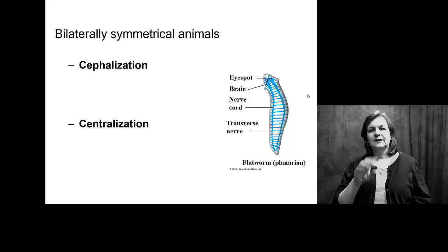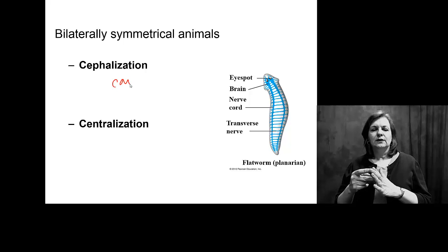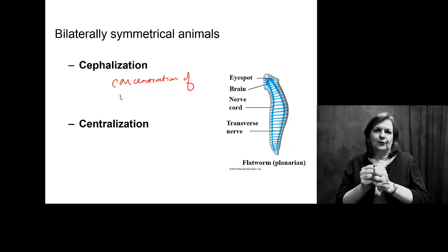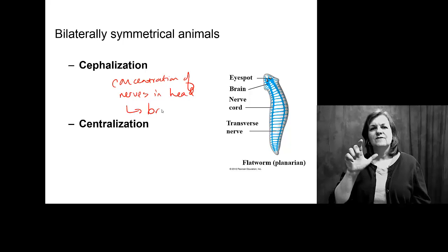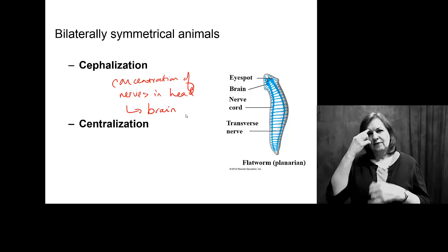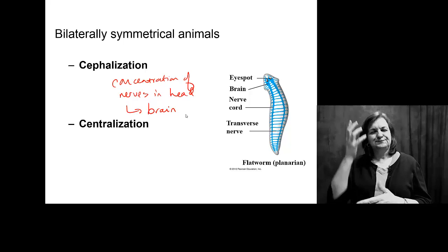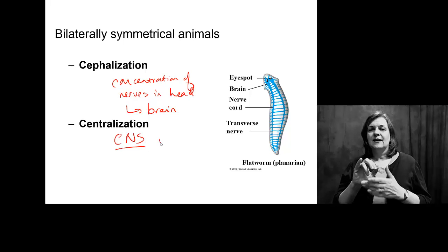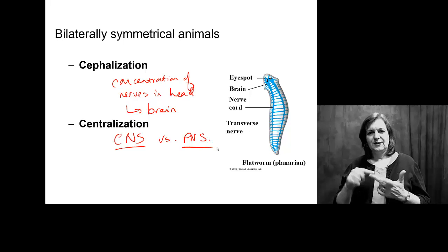When we get into bilateral animals, we get cephalization, or what we look at as a concentration of nerves in the head. We'll eventually look at it as being a brain, but for our planaria here, I'm not sure if we could consider brain as a proper term. Centralization — we start looking at the presence of an actual central nervous system versus just a peripheral nervous system in our organism. So all of these things start to work together.